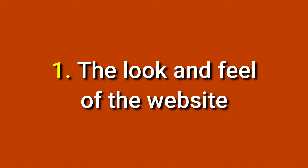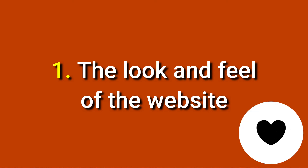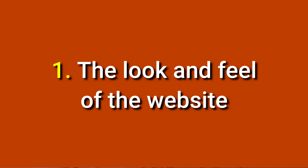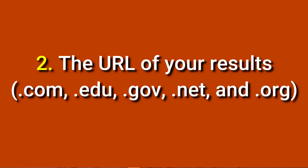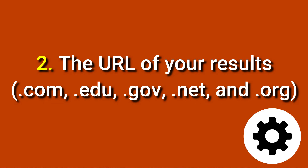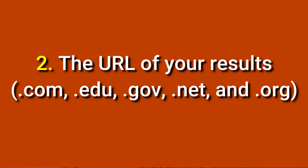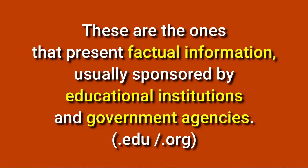One: the look and feel of the website. Reliable websites usually have a more professional look and feel than personal websites. Two: the URL of your results. .com, .edu, .gov, .net, and .org all actually mean something that can help you evaluate your website. Using the URL, you may know the type a website is considered as. First are information resources — these are the ones that present factual information, usually sponsored by educational institutions and government agencies. They include .edu or .gov in their URL.